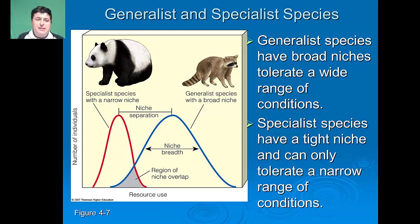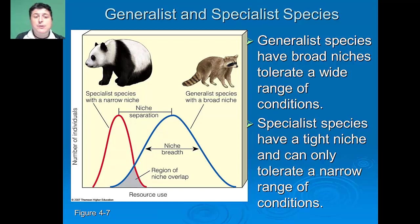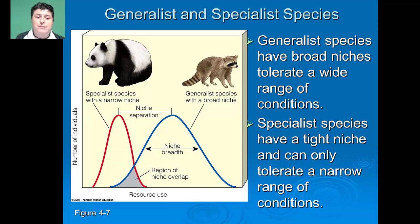Generalist species have a broad niche and can tolerate a wide range of conditions. Whereas specialist species have a very tight niche and can tolerate only a narrow range of conditions. A panda bear, for example, is a specialist — it can only survive on certain resources like bamboo shoots and leaves. Whereas a raccoon is a generalist — it can live in many different habitats and subsist on a wide variety of resources.